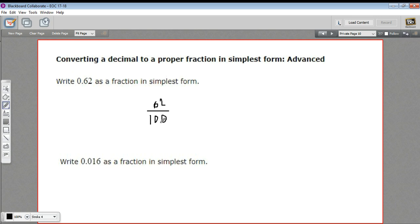But this can be reduced. I know that because both of these are even, so they can be divided by two. So if I divide the top by two, I'd get 31. If I divide the bottom by two, I'd get 50. And now, I don't think they have anything else in common. 31 is a prime number, so I don't think there's anything else you can divide here. So 31 fiftieths is that fraction in simplest form.